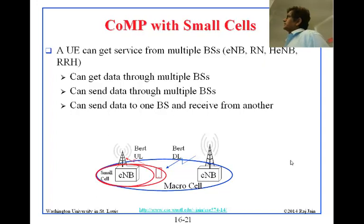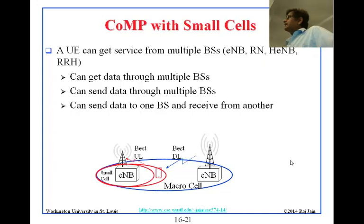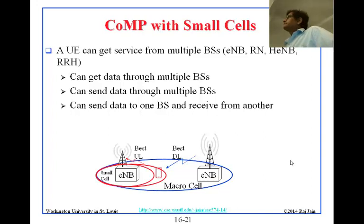A UE can get service from multiple base stations — multiple ENBs, multiple relay nodes, multiple home networks, or RRH remote radio heads. It can receive from multiple base stations simultaneously and can also send to multiple base stations. What is new here is simultaneous transmission: a particular mobile's uplink could go to one tower while its downlink comes from another. Any combination is possible.